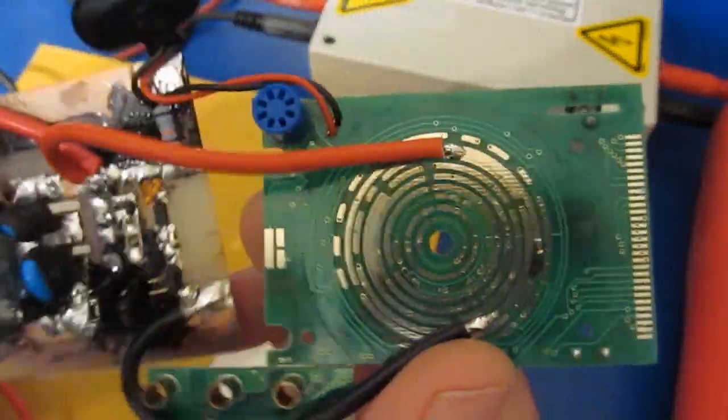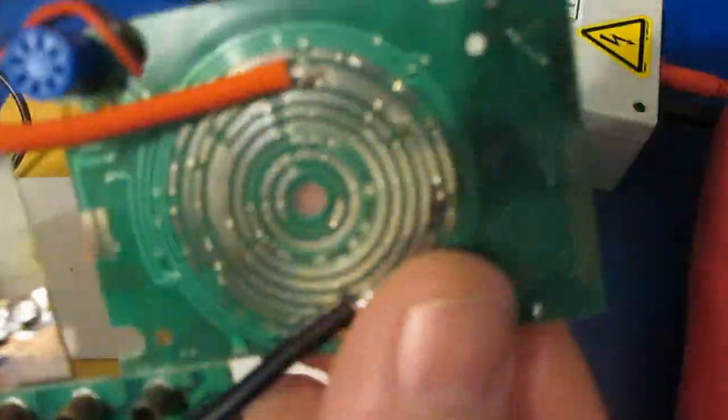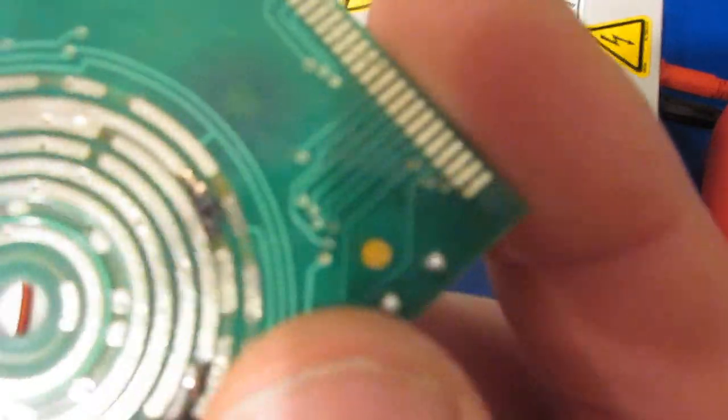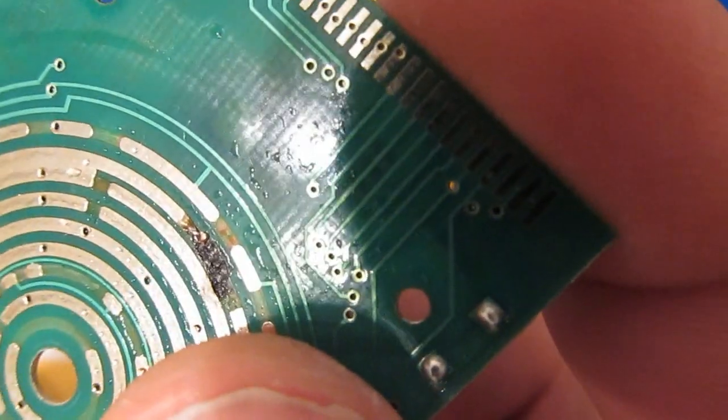So again, if you have a thousand volt source, this input protection is only going to limit that to a few hundred milliamps. And that couple hundred milliamps is certainly enough energy to do a substantial amount of damage to the circuit board itself.